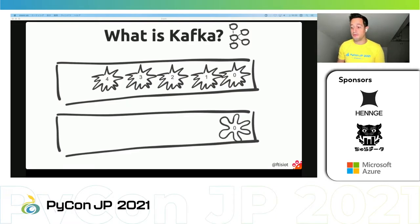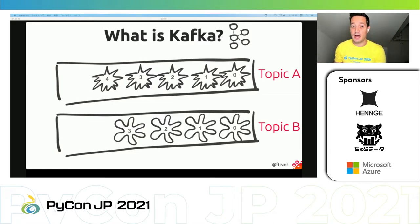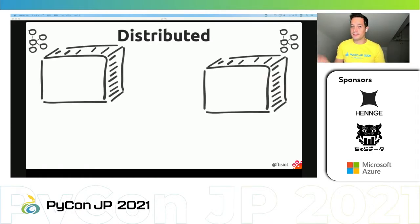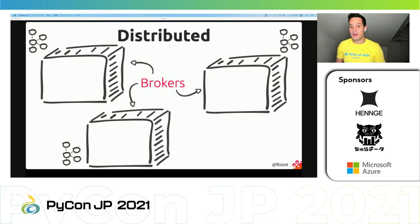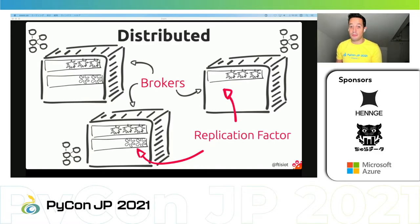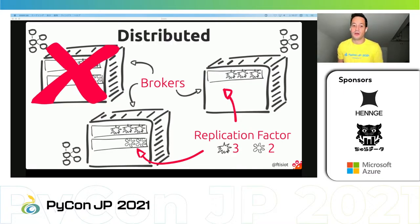Kafka can handle multiple logs of multiple types of events — these are called topics in Kafka terms. If we want to put Kafka at the center of our data infrastructure, we need to be sure it doesn't lose a message and doesn't crash. With Kafka, this is handled by default because Kafka is a distributed system. When we create a Kafka instance, we create a set of nodes — called brokers — and the log information is stored across the cluster multiple times, following a parameter called replication factor. For example, replication factor three means three copies. This way, even if we lose a node, we don't lose any information.